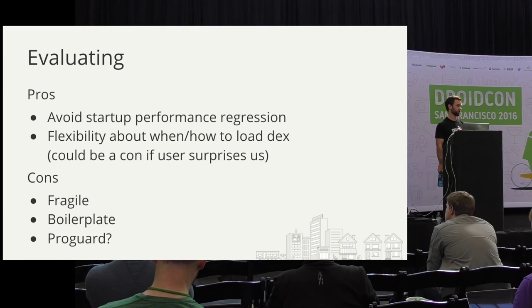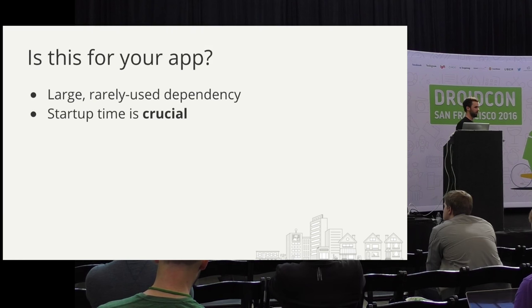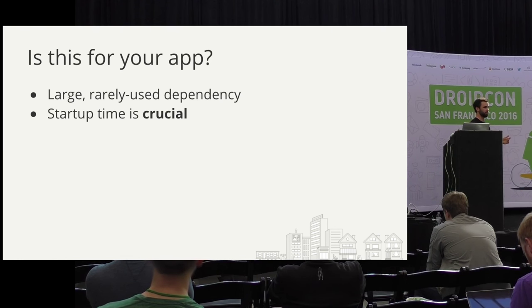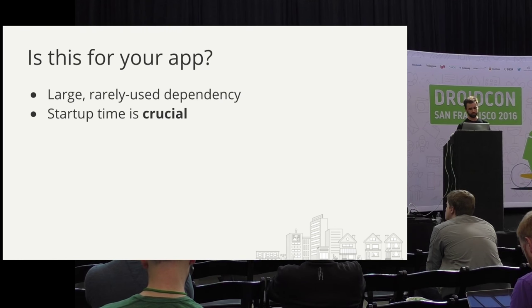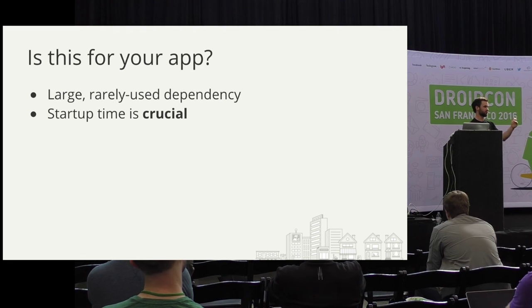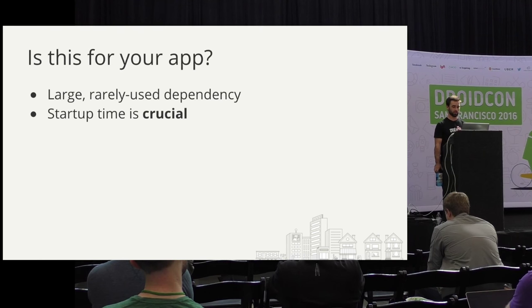So when would this be useful? If your app has a very large dependency that is only used in an edge case and your startup time is incredibly crucial, this could be a good fit. For example, with the Yelp app, we play videos and we have a video library. Lots of users watch videos, but our home screen is not a video and maybe not everyone watches videos. So by pulling that out this way, if we were right on the threshold, it might be worth it. But ultimately for our case, we decided it wasn't worth the engineering overhead.